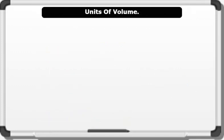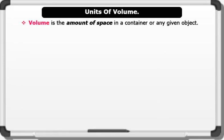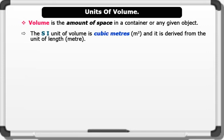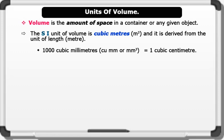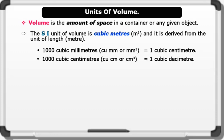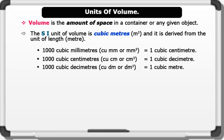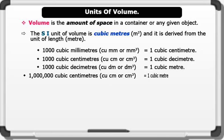Units of volume. Volume is the amount of space in a container or any given object. The SI unit of volume is cubic meters, and it is derived from the unit of length. Other derivations of the unit of volume include: 1000 cubic millimeters equals 1 cubic centimeter; 1000 cubic centimeters equals 1 cubic decimeter; 1000 cubic decimeters equals 1 cubic meter; and 1 million cubic centimeters equals 1 cubic meter.